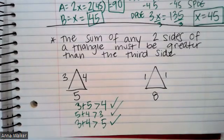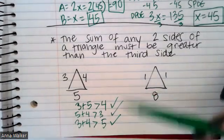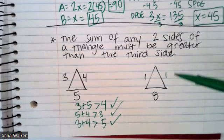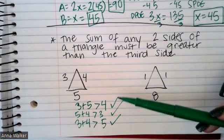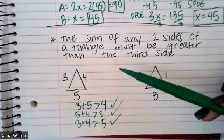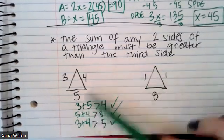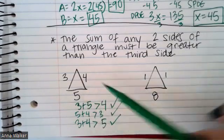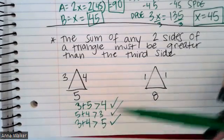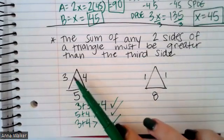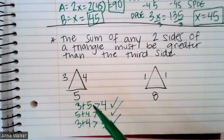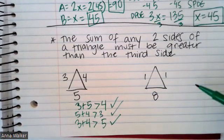All right, let's look at the second example. You'll notice that before we move on, these three sides all work. We added up any two sides and they were all greater than the third side. So that means that with measurements of 3, 4, and 5, you could form them together to make a triangle.